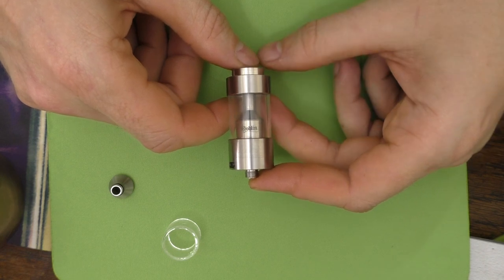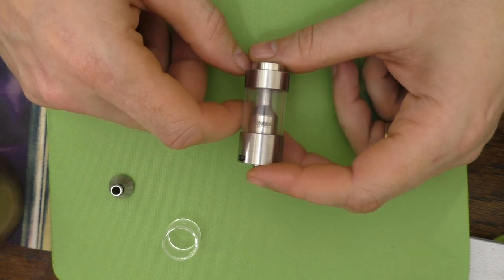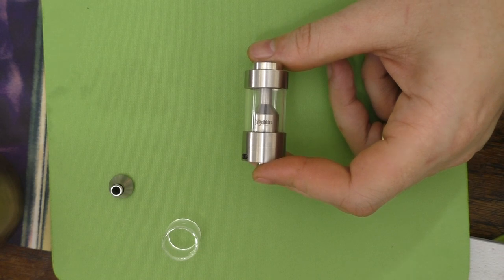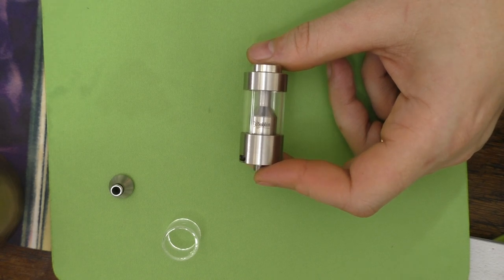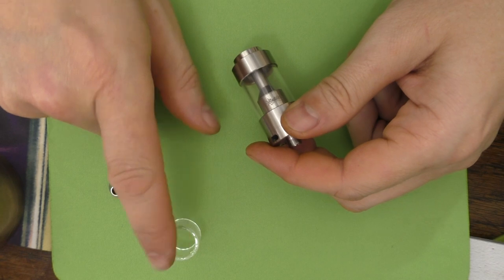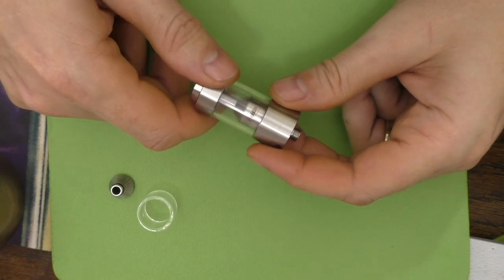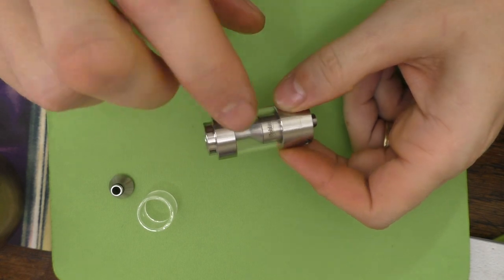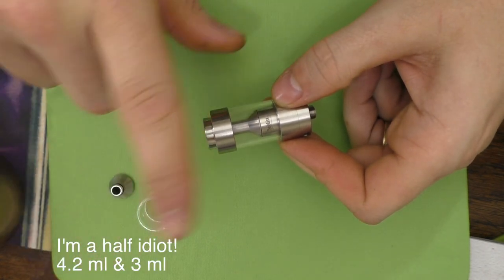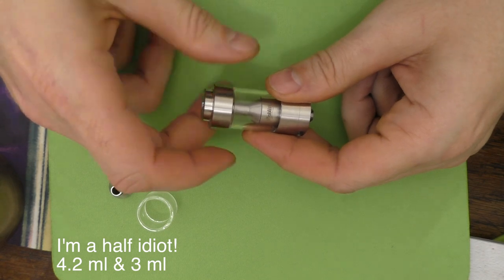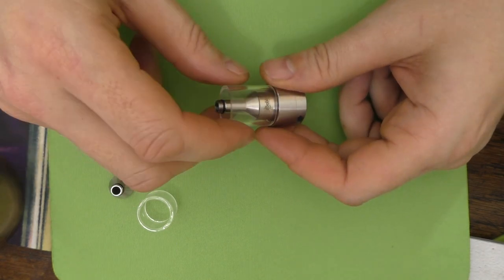So you take the top off of the chimney section, replace it with the taller chimney, put the bigger glass section on. And that's it in big mode. This gives you 4.3 mil of juice in this mode. 3 mil of juice with the smaller.